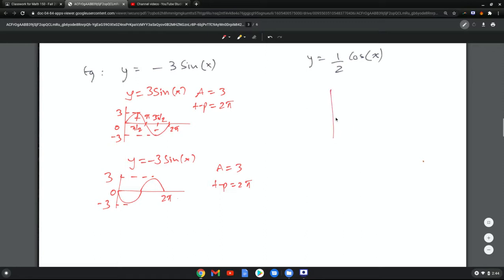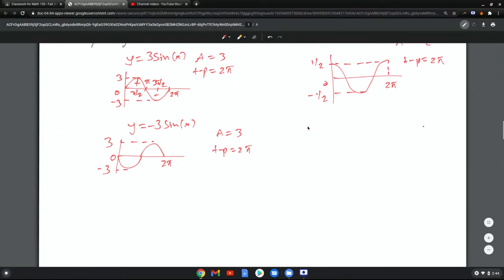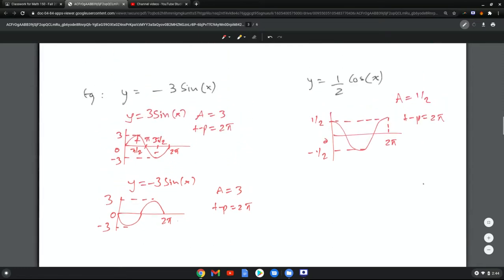One half cosine x. Again, the shape of cosine x doesn't change. What changes is the amplitude. So this is one half and this is negative one half. So the amplitude is one half and the time period is 2 pi.